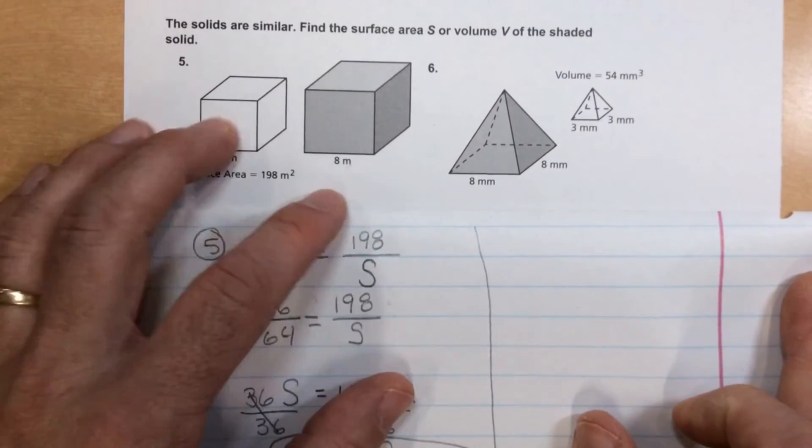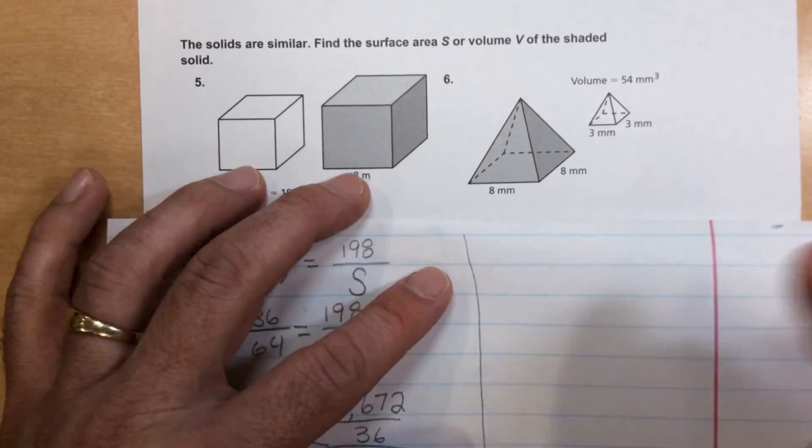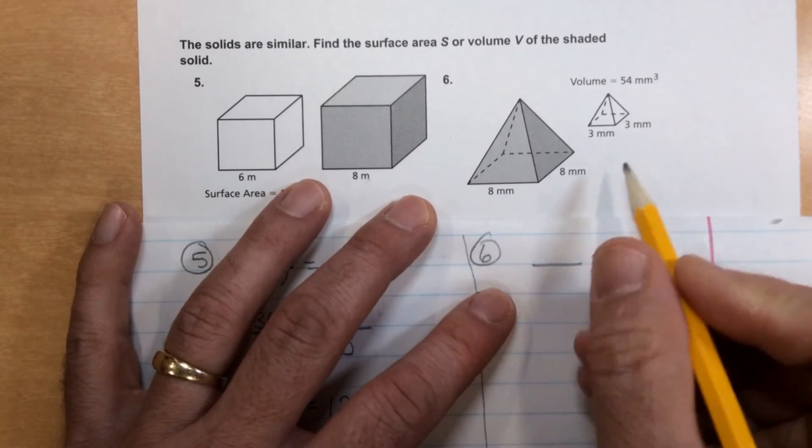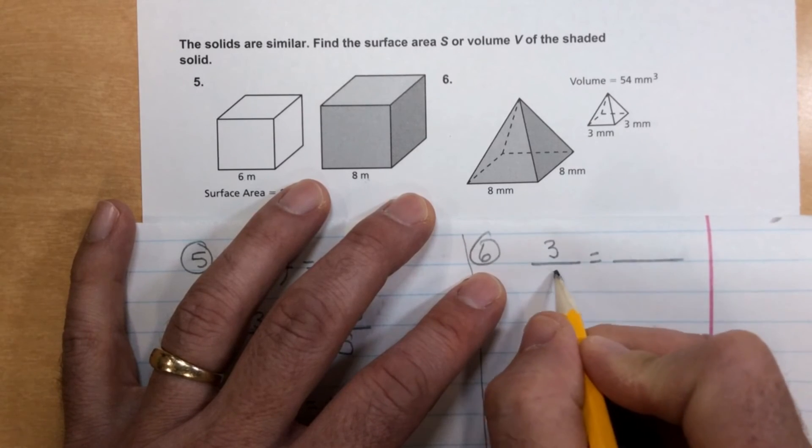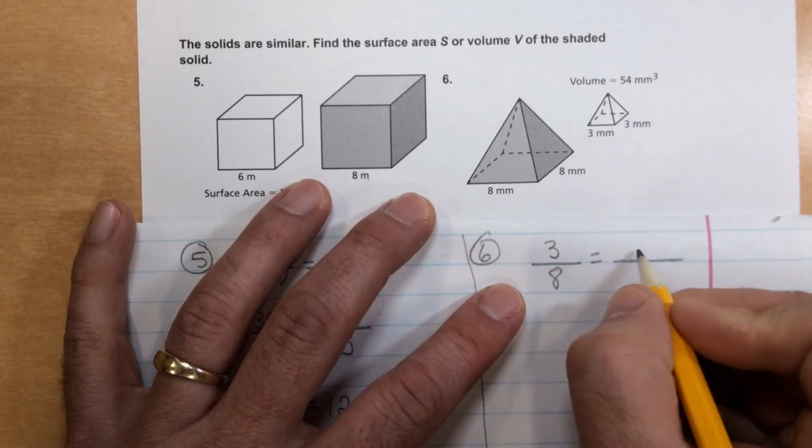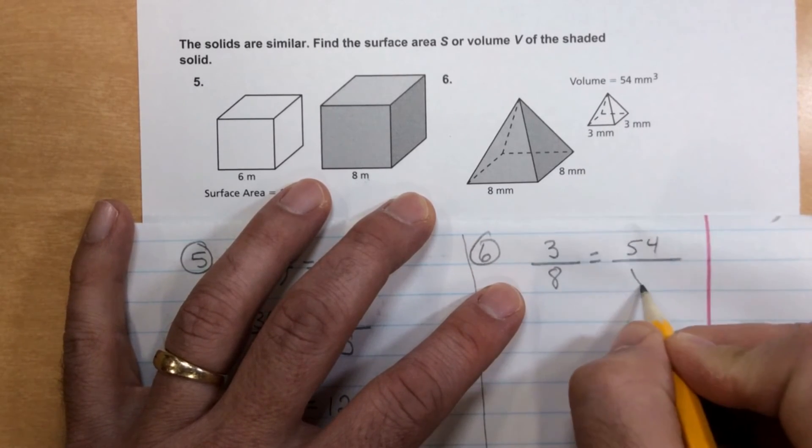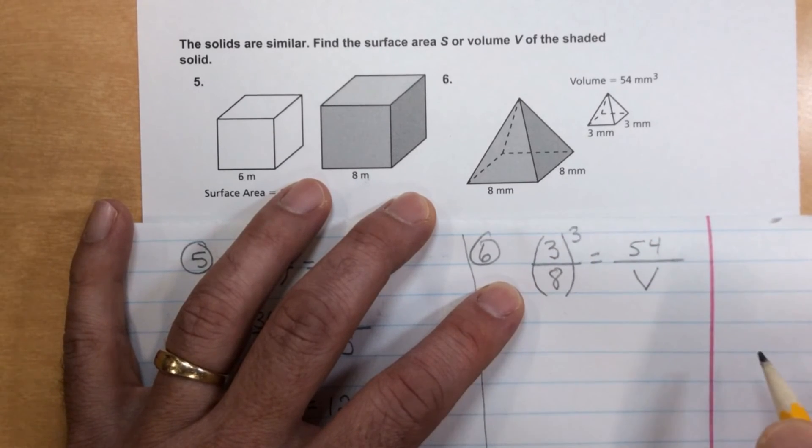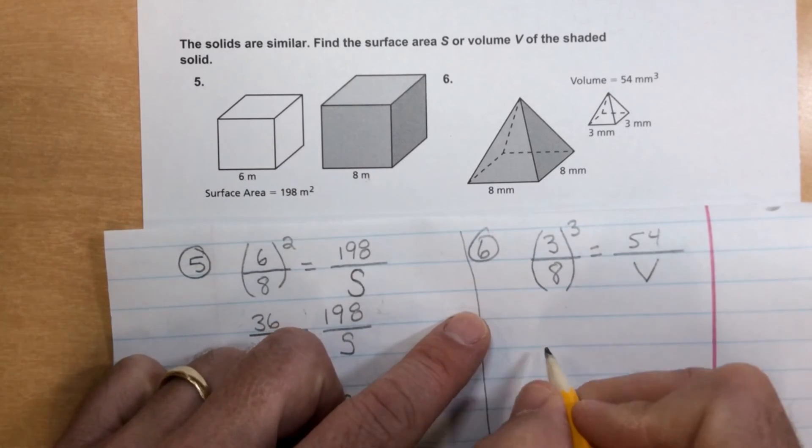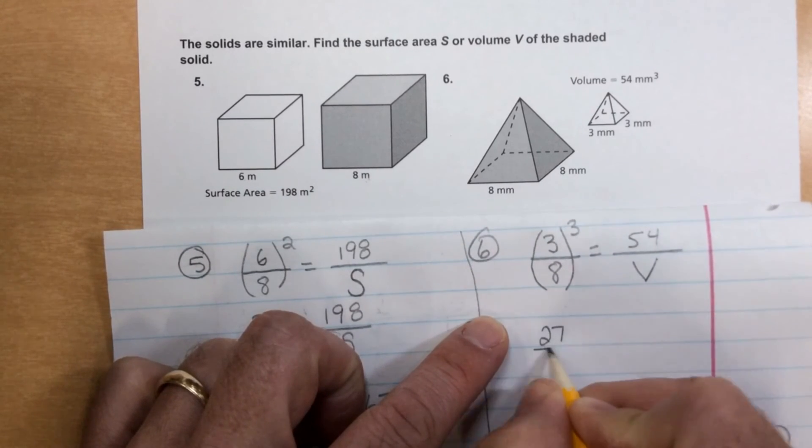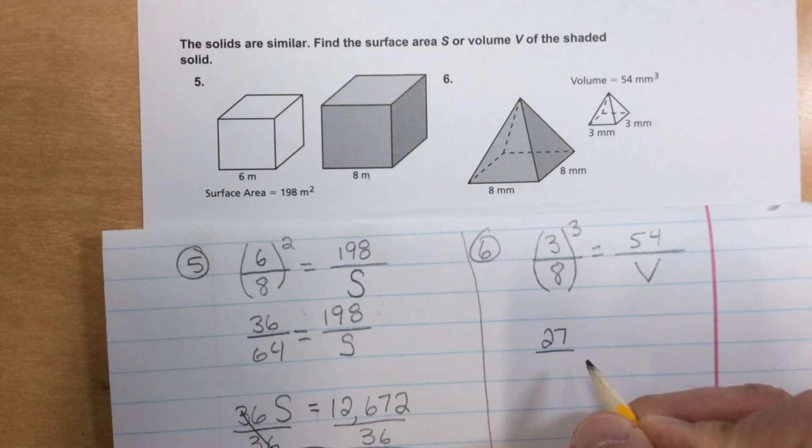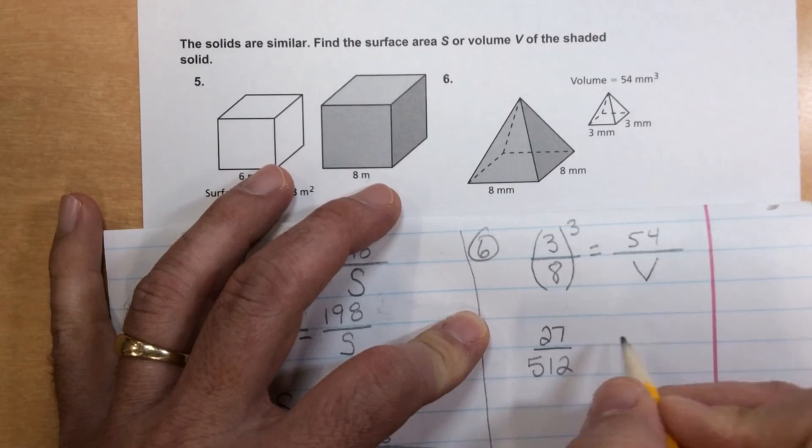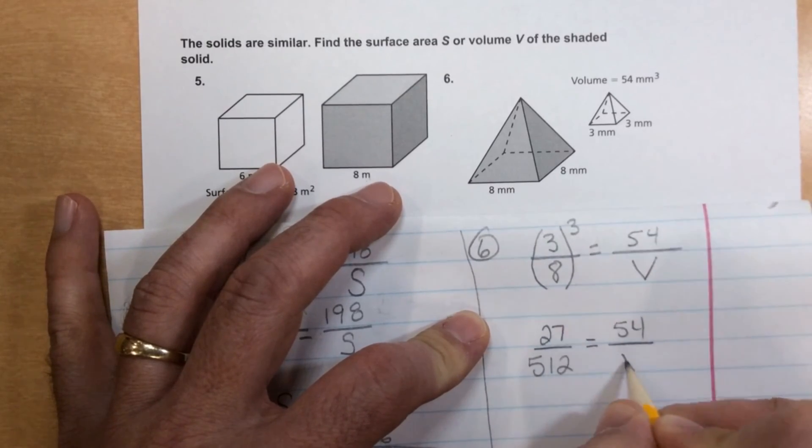This problem is similar, except we're going with volume. So again, we'll start with a proportion, small side over large side. And that gives us the small volume over the large volume. But it's volume this time, not area. So we don't square it, we cube it. Okay, so 3 times 3 times 3 is 27 for the top. 8 times 8 times 8 is 512 for the bottom. 54 and V.